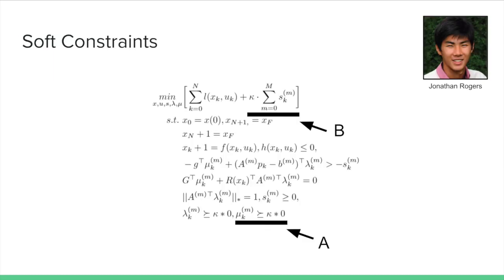Hi, my name is Jonathan Rogers, and as we transition into the Julia code implementation, I will talk a little bit more about two key features of the algorithm: first, soft constraints, and second, warm starting our IPOPT solver. First of all, I will talk about the need for soft constraints.